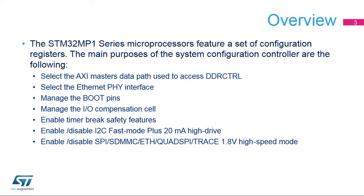Selection of the data path for AXI masters to the DDR controller. Selection of the Ethernet PHY interface. Management of the I/O compensation. Configuration of the 20mA high-drive I/Os used for I2C Fast Mode Plus. And configuration of the high-speed 1.8V I/Os used for SPI, SDMMC, Ethernet, Quad SPI, and Trace.